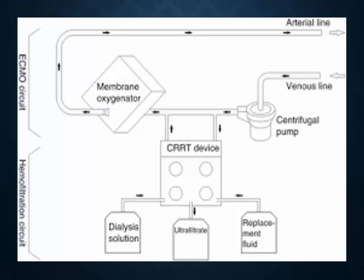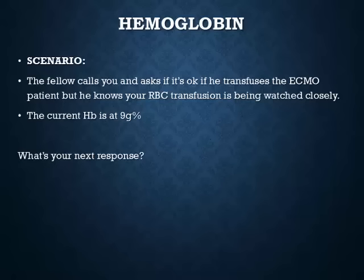For centrifugal pumps, the CRRT device is connected after the pump; for older roller pumps, it's connected before. CRRT circuits will constantly alarm because they can't handle the massive flows coming from the ECMO pump — which are triple what CRRT circuits expect. Some recommend placing CRRT before the centrifugal pump for this reason. At Mayo Clinic, they use an inline hemofilter, but even that has flow limitations. The evidence on the best approach is limited.